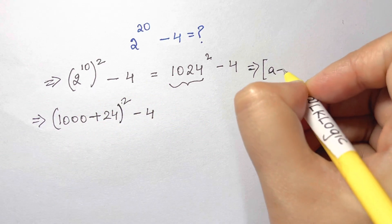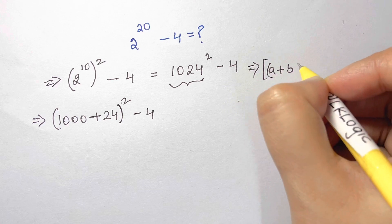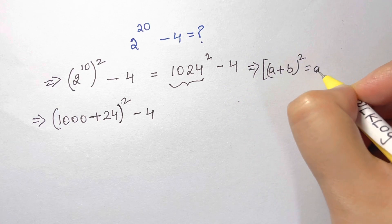Now this is in the form of a plus b the whole square. I'll write it here: a plus b the whole square, which is equal to a square plus 2ab plus b square.